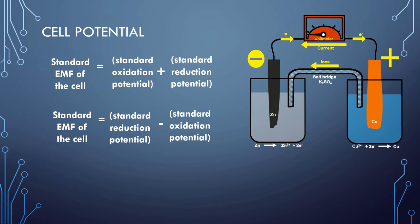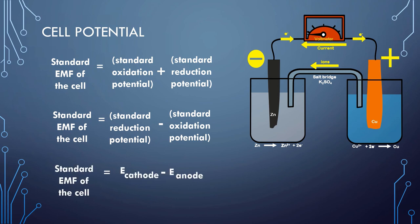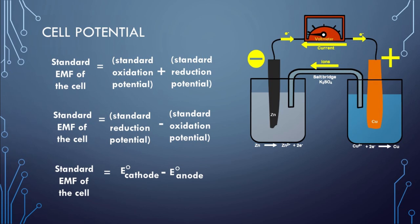Furthermore, in the representation of a cell, the electrode on which oxidation takes place (the anode) is always written on the left-hand side, and the electrode on which reduction takes place (the cathode) is written on the right-hand side. Therefore, the expression can be written as: E°cell = E°cathode − E°anode.